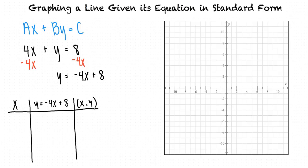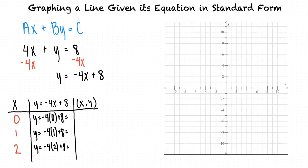If we use x equals 0, 1, and 2, we can substitute those x values into y equals negative 4x plus 8, and we get three points that are on the line.